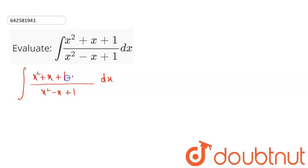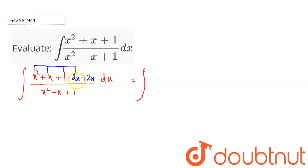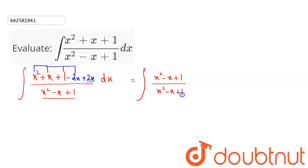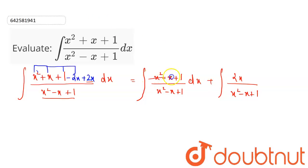In the numerator, I will be adding and subtracting 2x. Combining these four terms, I can write this as the integral. If I split this numerator with this denominator, I get x squared minus x plus 1 divided by x squared minus x plus 1, and here you can see that this term gets cancelled out.